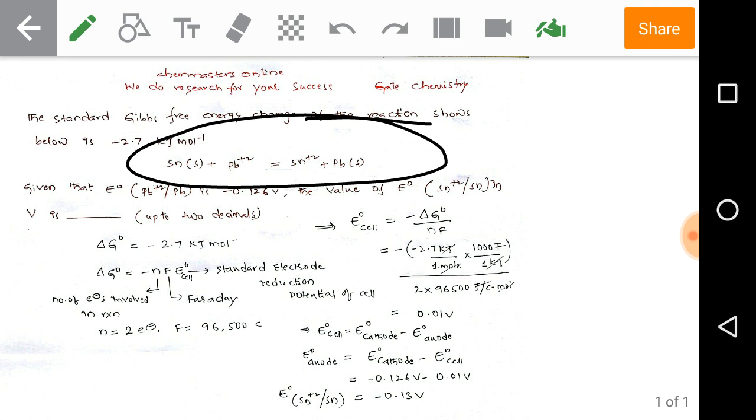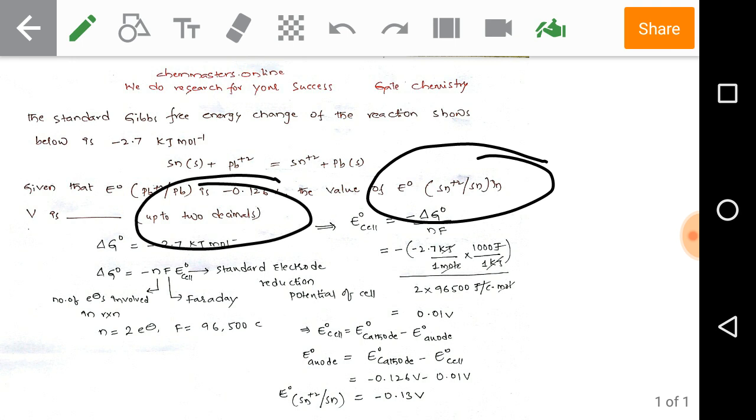Given that E⁰, the standard reduction potential of the half cell for Pb²⁺ to Pb is minus 0.126 volts, the value of E⁰ for Sn²⁺ to Sn in volts is what we need to calculate up to two decimals.